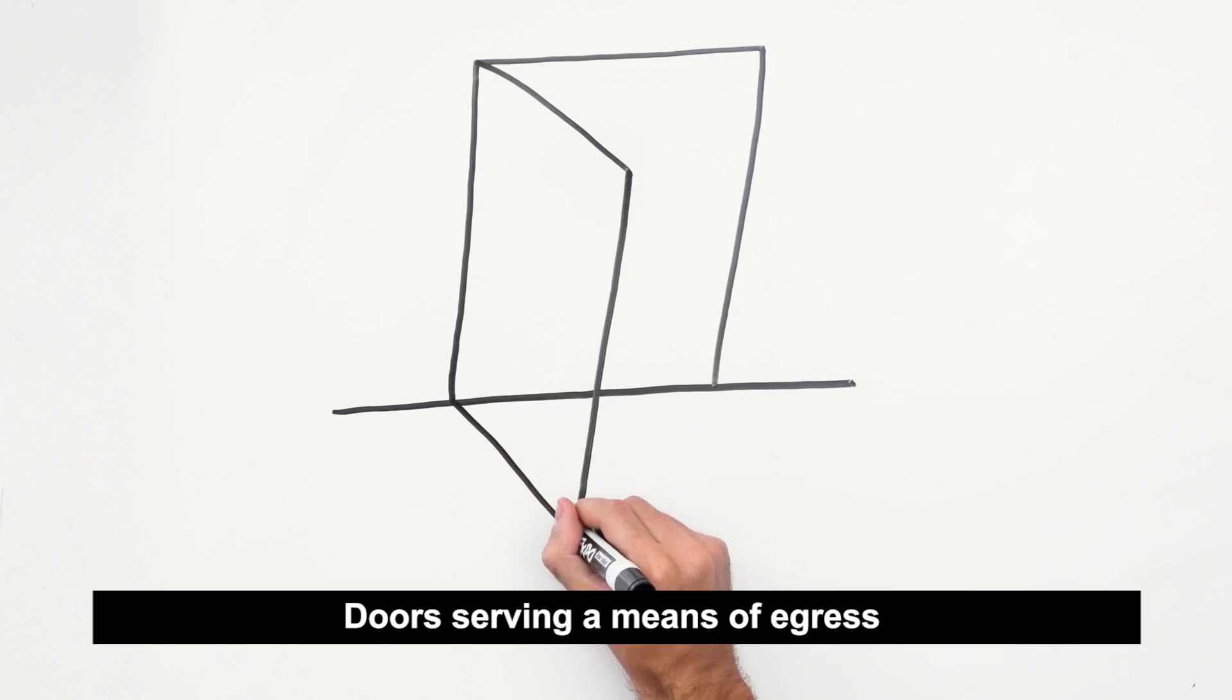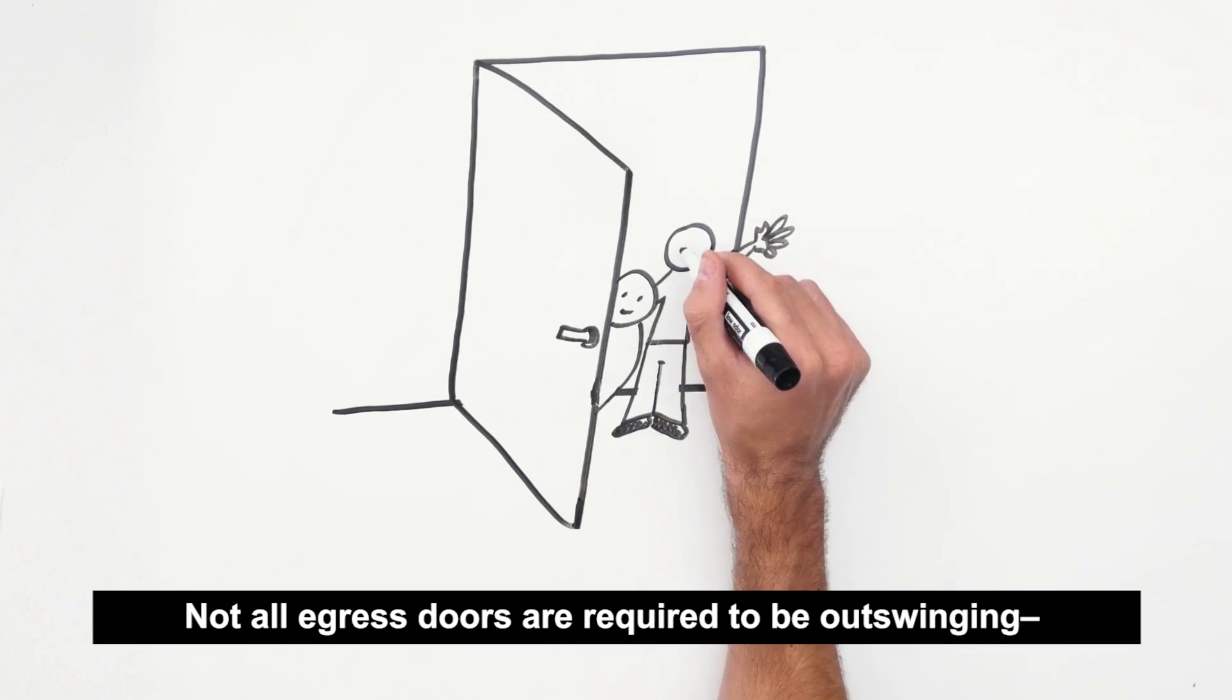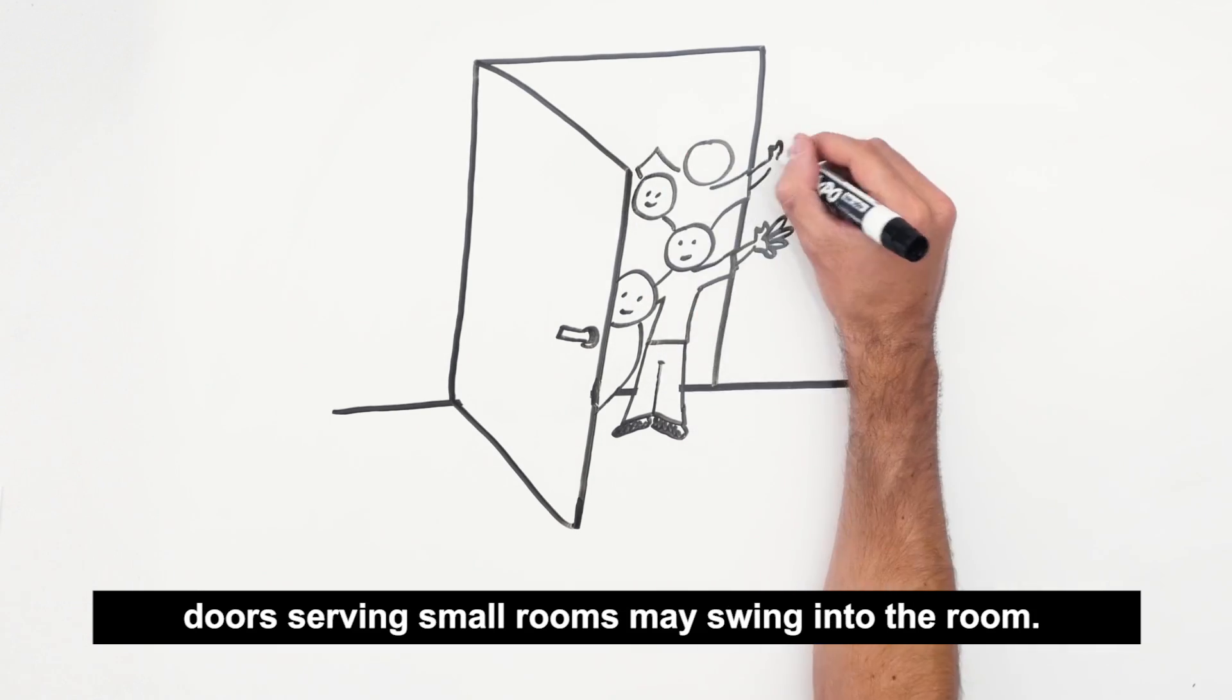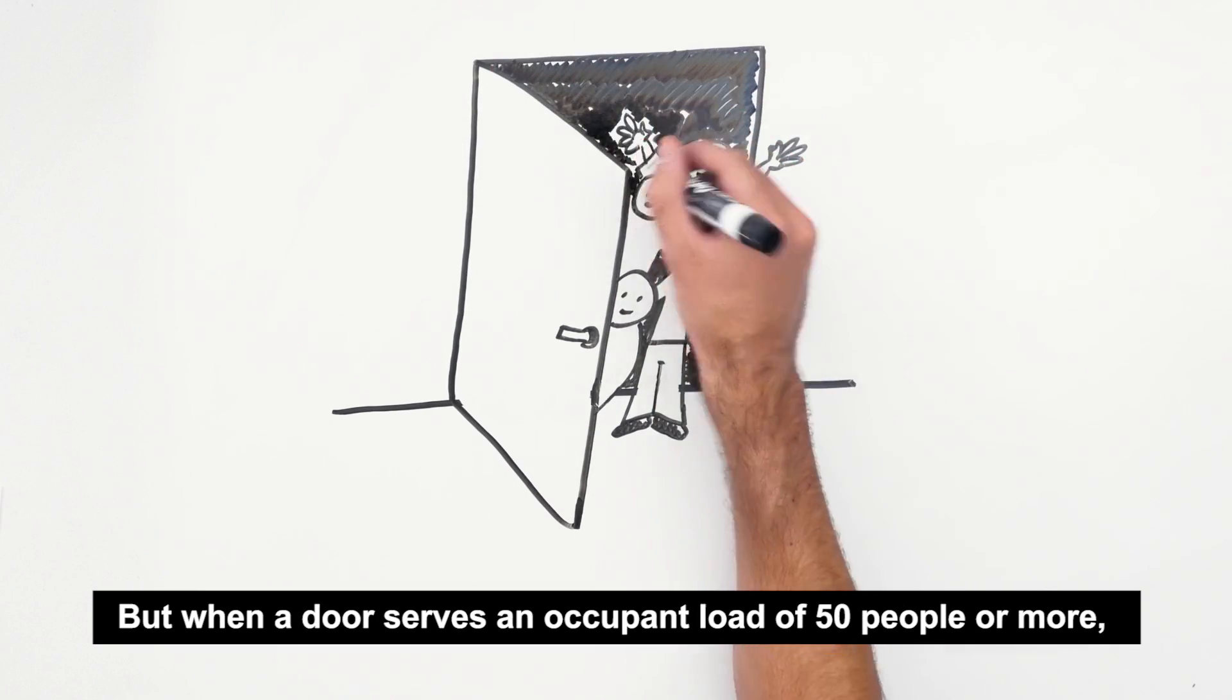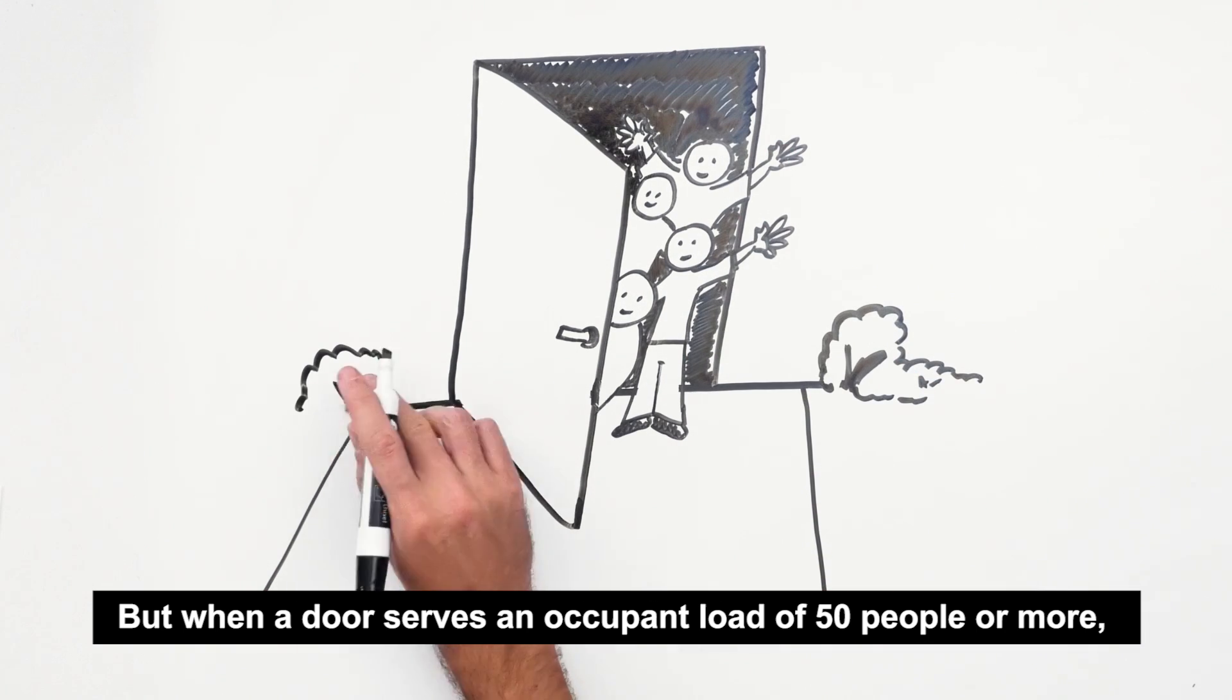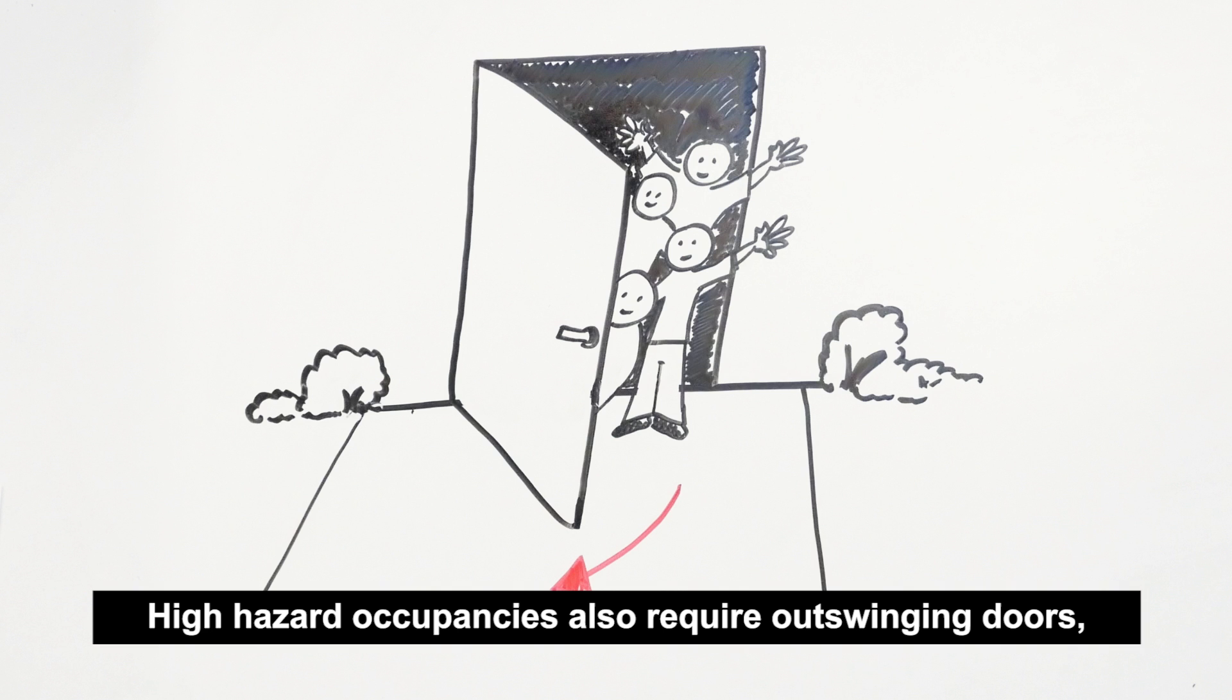Doors serving a means of egress are usually required to be swinging doors. Not all egress doors are required to be out swinging. Doors serving small rooms may swing into the room, but when a door serves an occupant load of 50 people or more, it must swing in the direction of egress. High hazard occupancies also require out swinging doors, and NFPA 101 requires doors used in an exit enclosure to be out swinging.